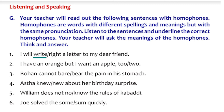'I have an orange but I want an apple too.' They are talking about another fruit, so it's T-O-O. The third one: 'Rohan cannot bear the pain in his stomach.' They are not talking about an animal, so the spelling is B-A-R-E, not B-E-A-R. 'Ashita knew about her birthday surprise' - spelling is K-N-E-W. 'William does not know the rules of Kabaddi' - the spelling is K-N-O-W.